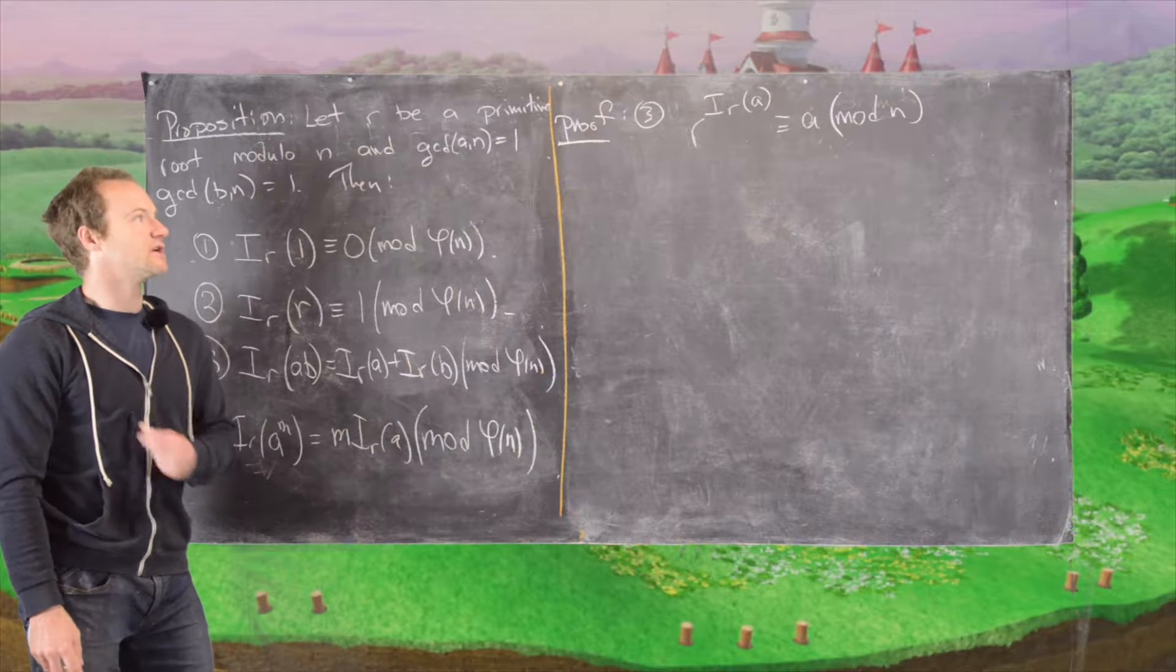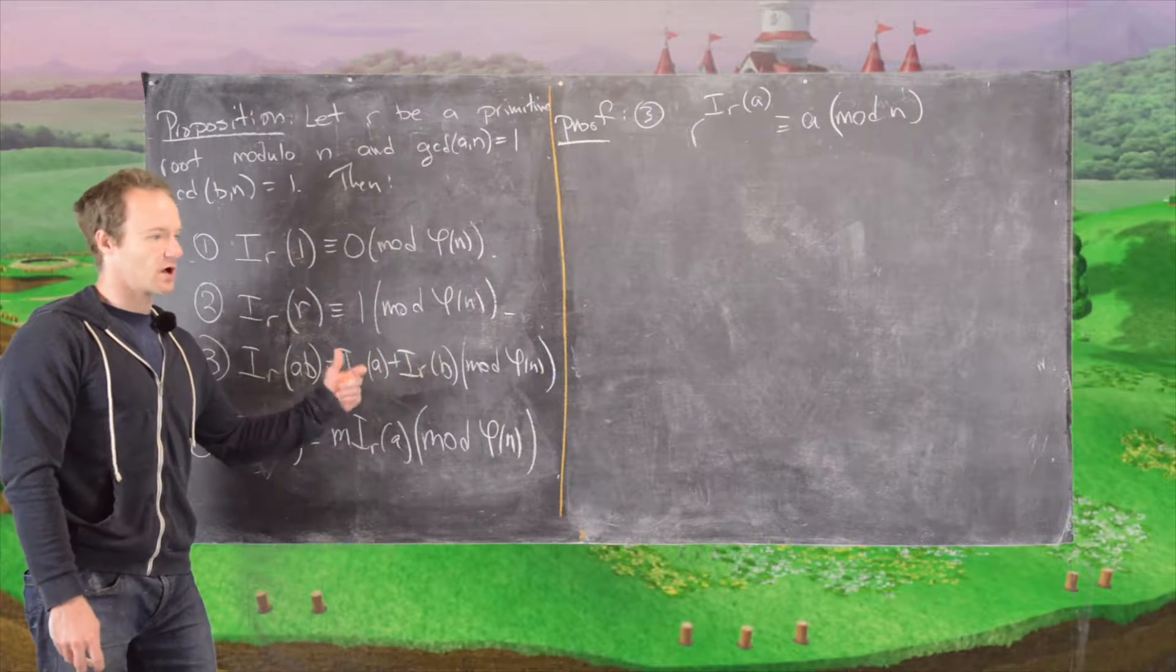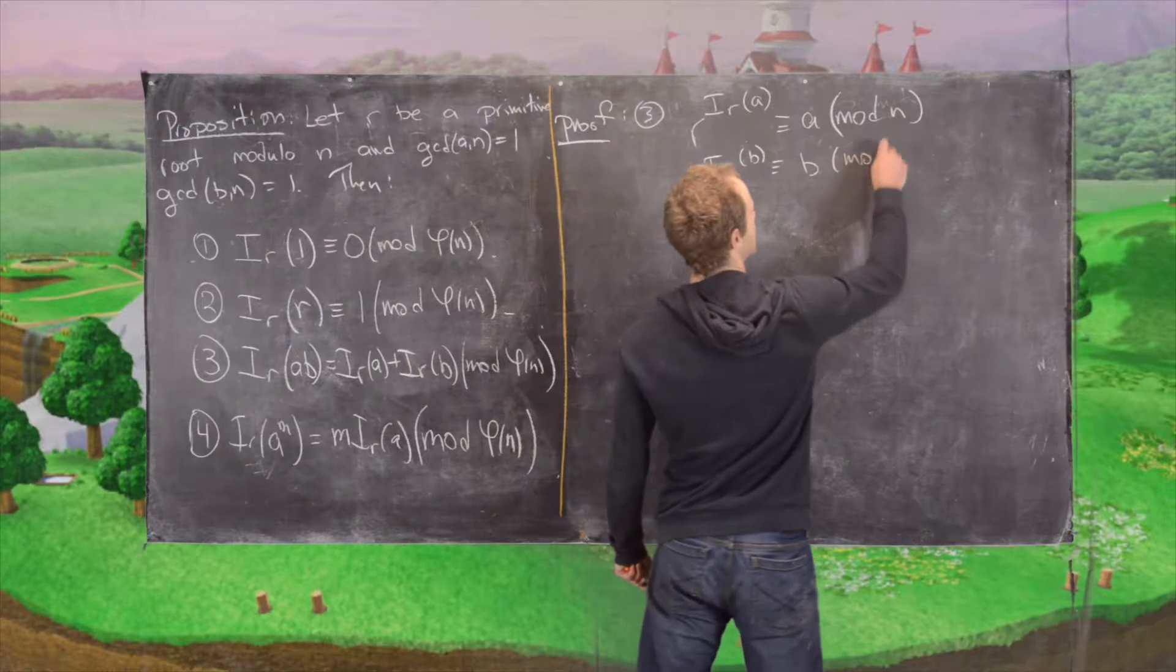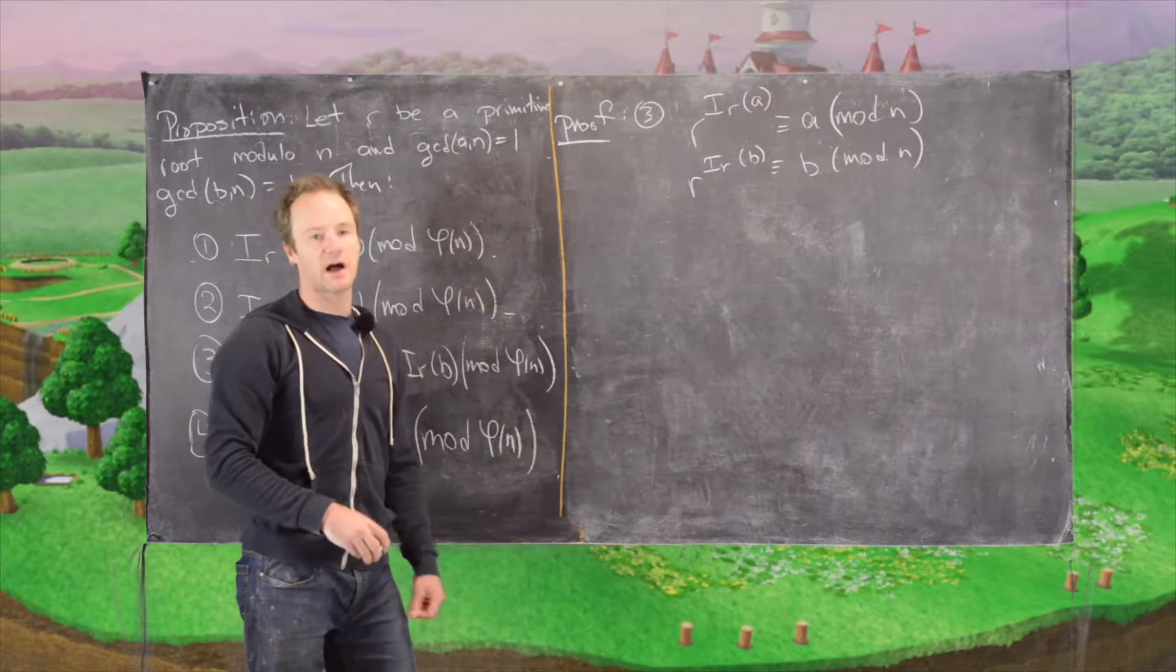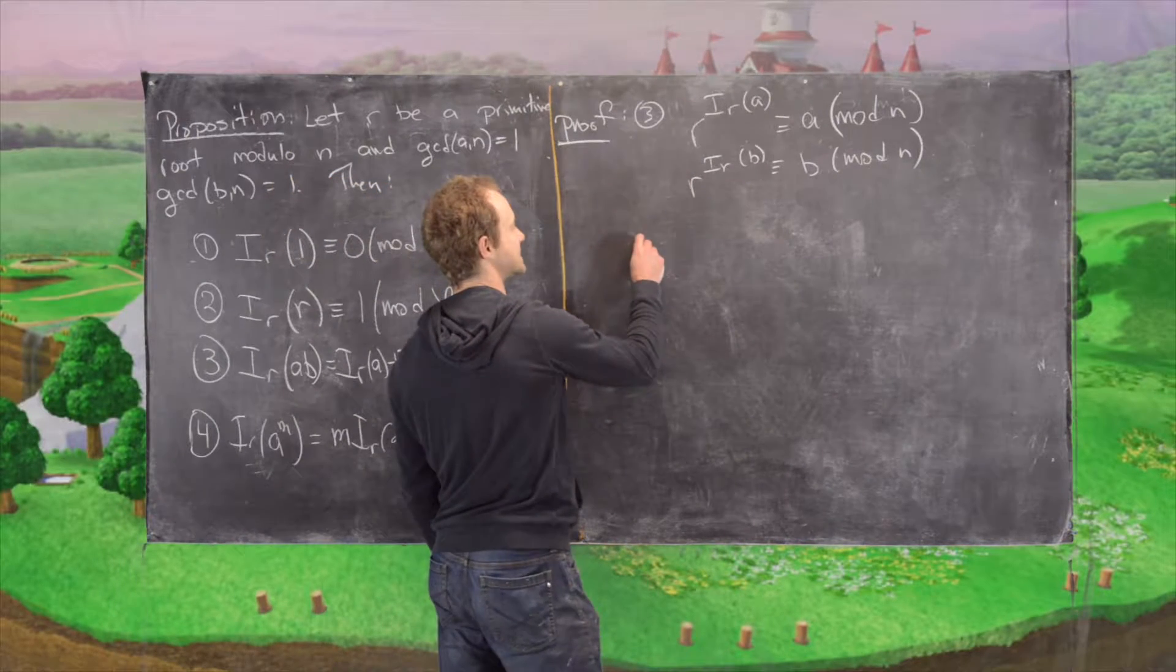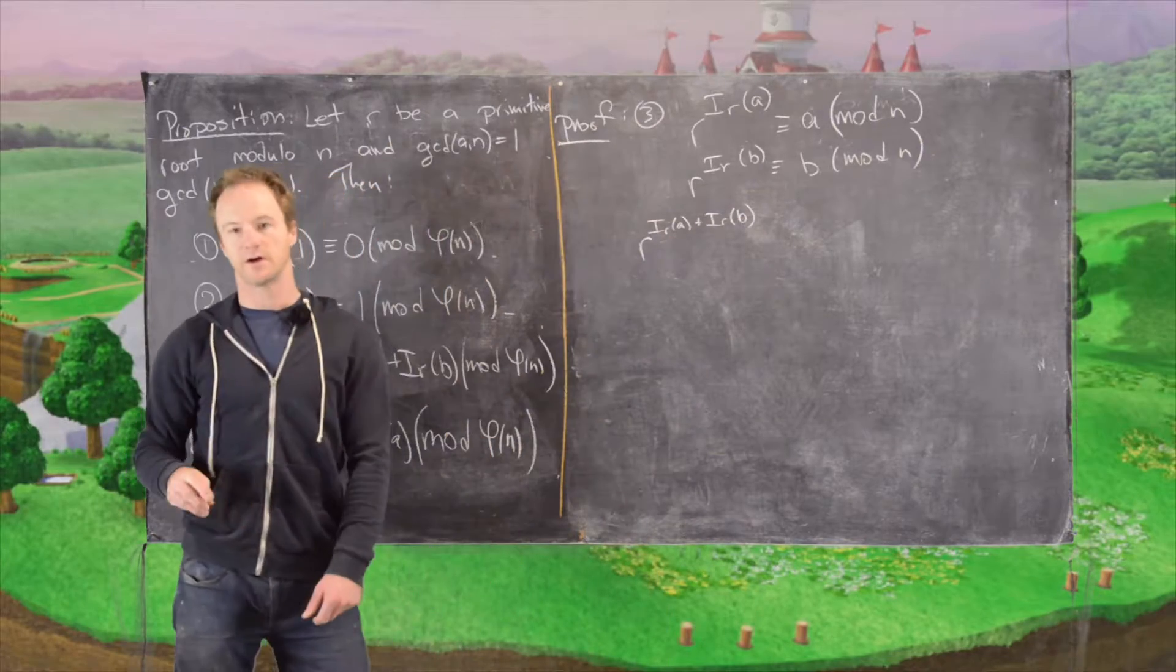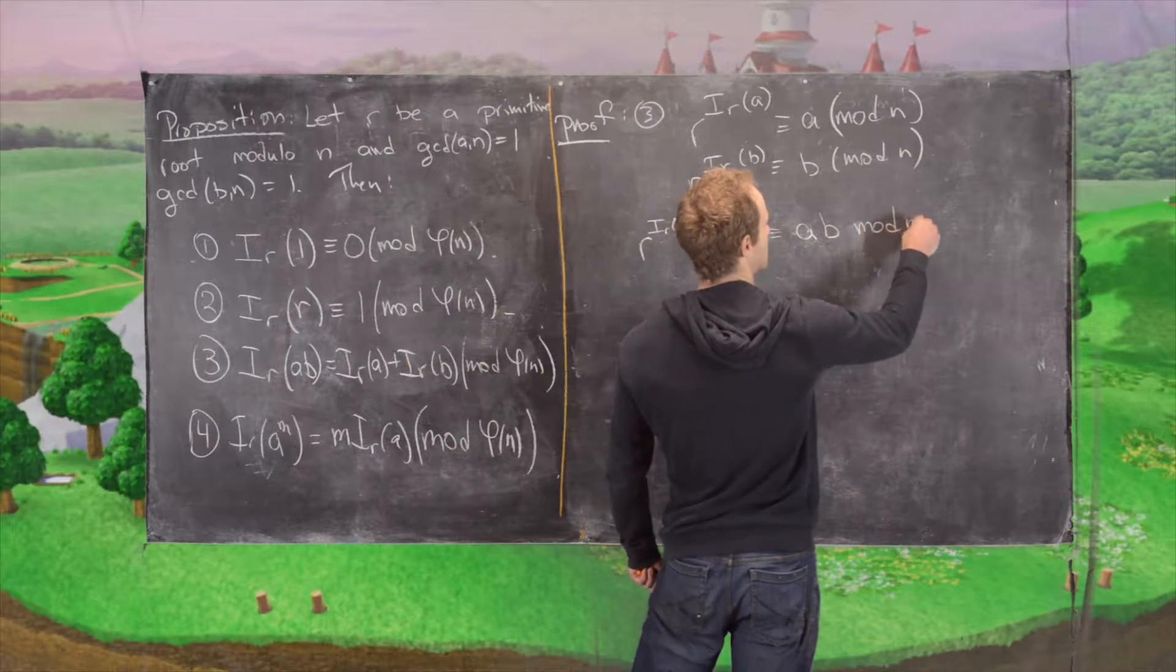In this case, we're calling the logarithm an index. And then we also have r to the power i_r(b) is congruent to b mod n. Now using the arithmetic modulo n, we can multiply both sides of these congruences and get another congruence. So we multiply the left-hand sides, and then using exponent rules gives us r to the i_r(a) plus i_r(b) is congruent to ab mod n.